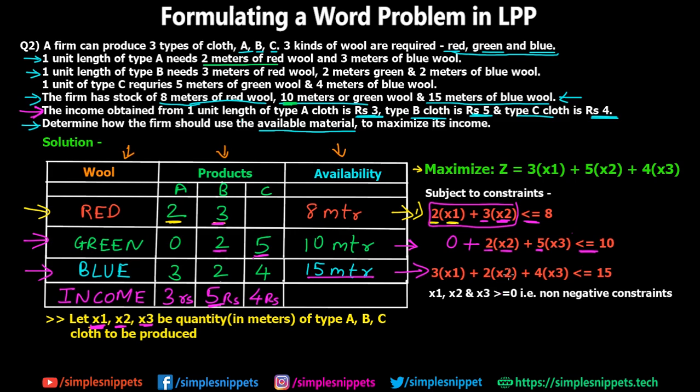So this is the complete formulation of the LPP for this problem. I hope you now have a good understanding of how to formulate an LPP — how to make the table, make the assumptions, and then formulate the maximization equation and the constraints. In further videos we'll use the graphical technique to solve this, maximize and find the maximum income, and determine what quantities should be produced.